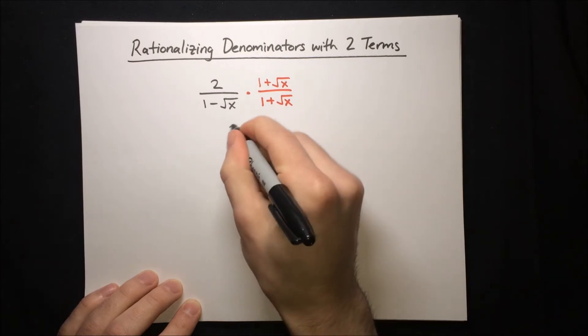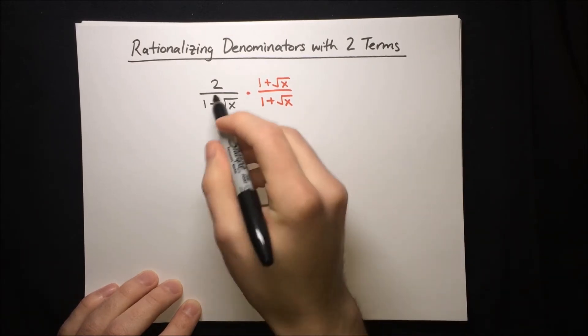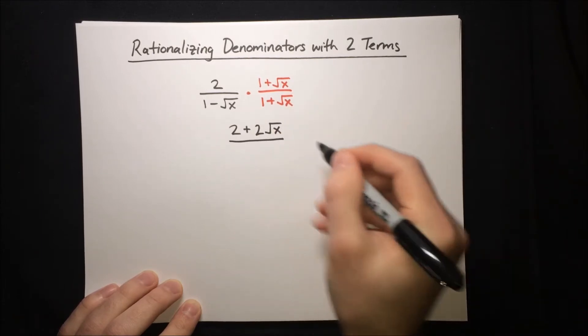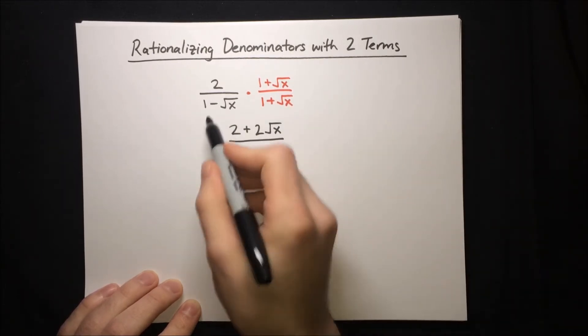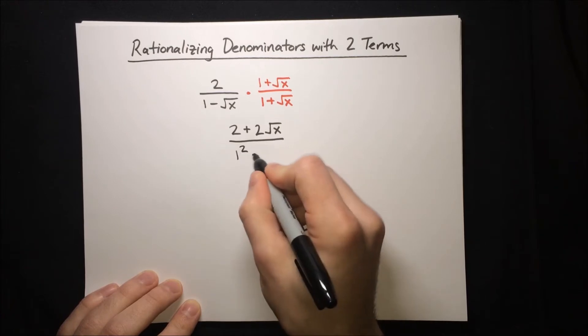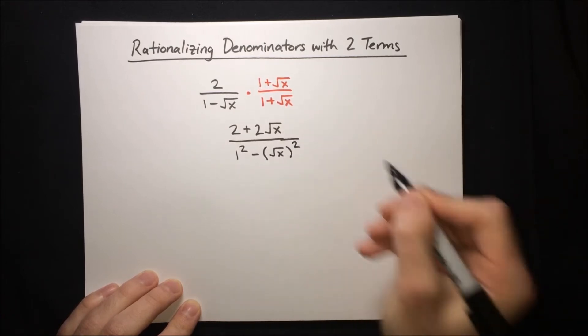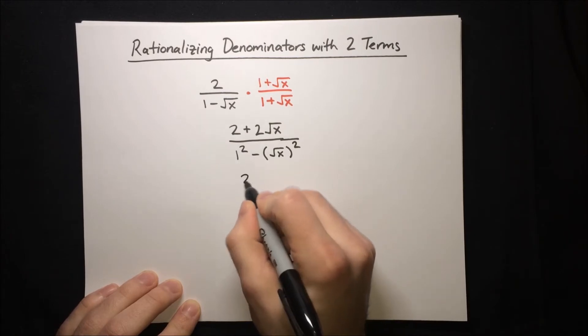2 times 1 is 2, then plus 2 root x, and then the denominator is a difference of squares, so this is just 1 squared minus root x squared.